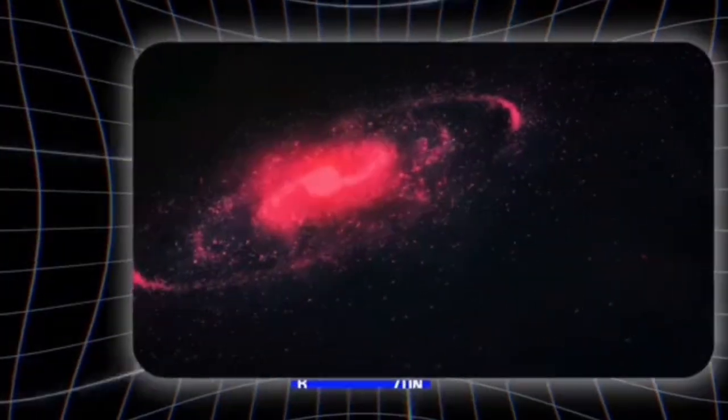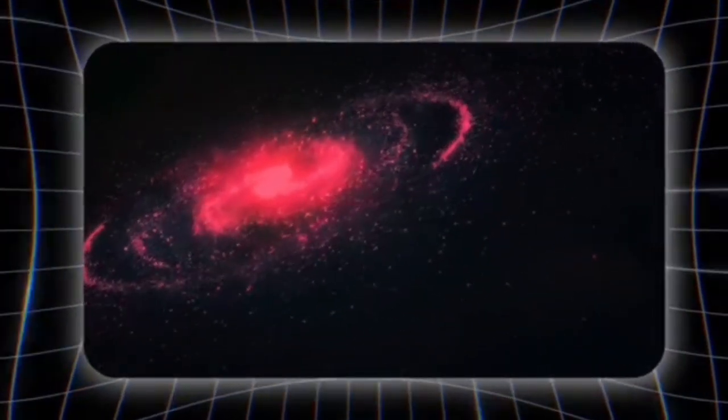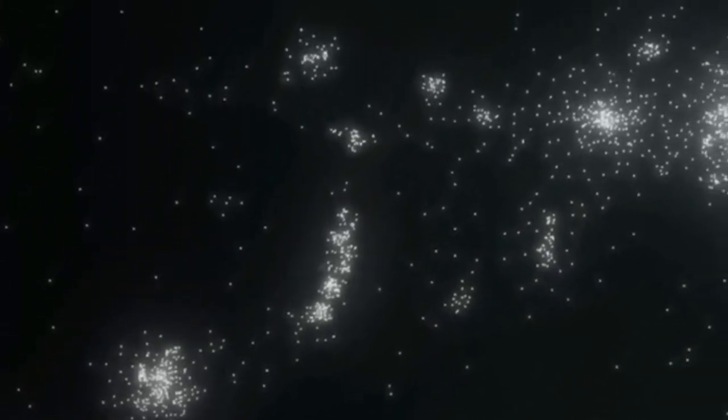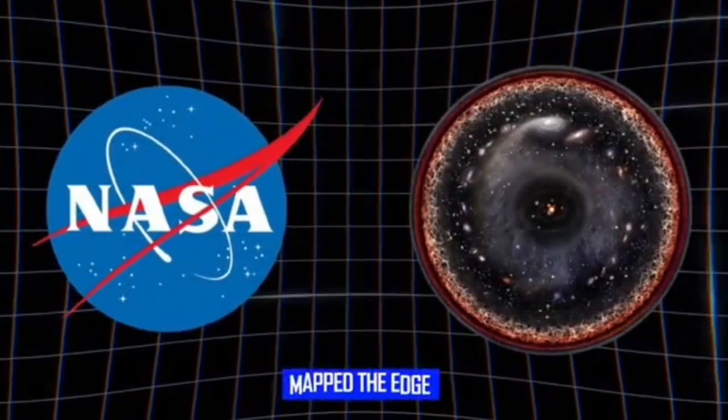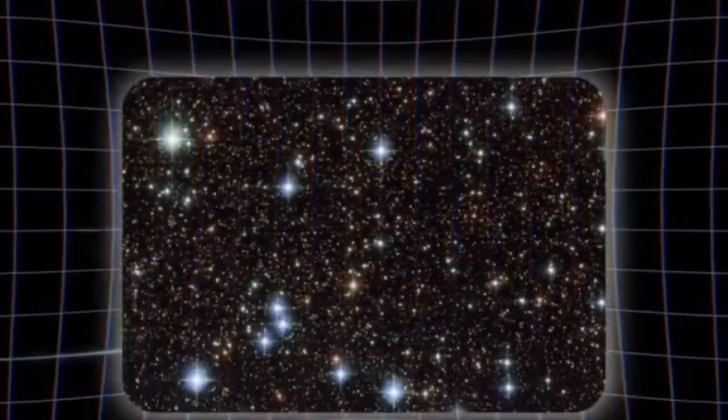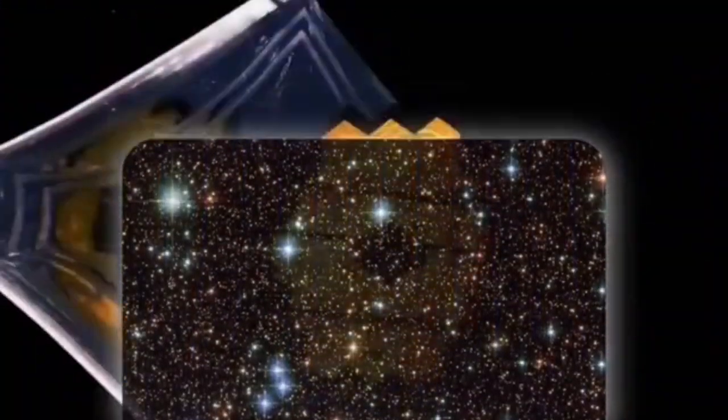It didn't just map ancient galaxies, it mapped what may be the first detailed signs of the true edge of the observable universe. And what it revealed wasn't emptiness. It was structure, clusters, movement, and something even more disturbing. The universe may not be symmetrical.